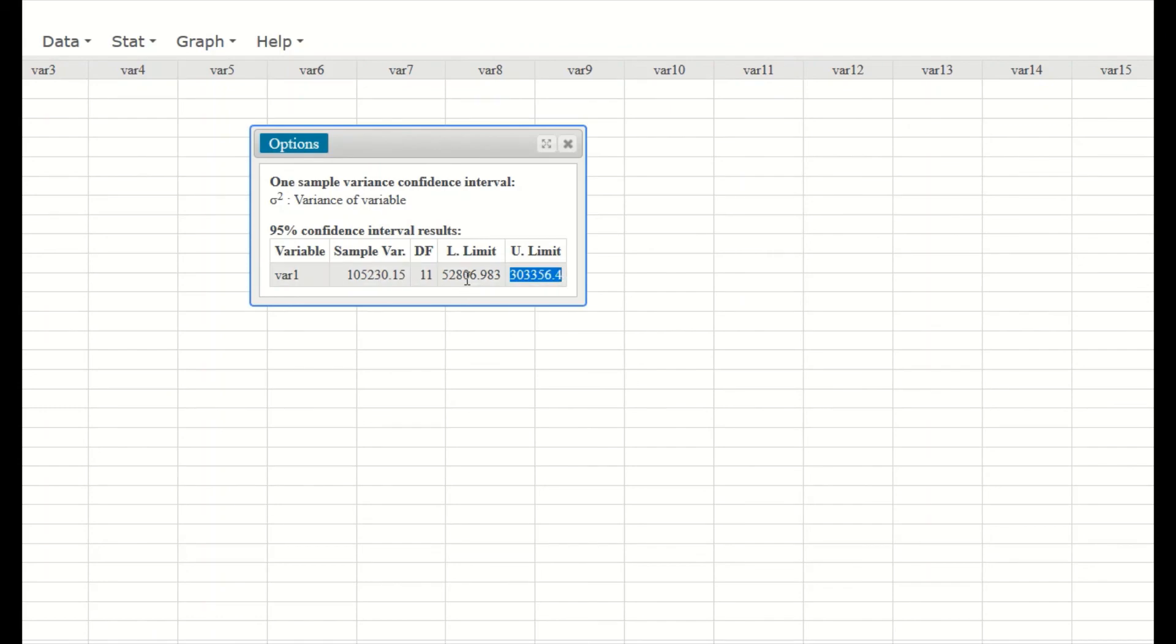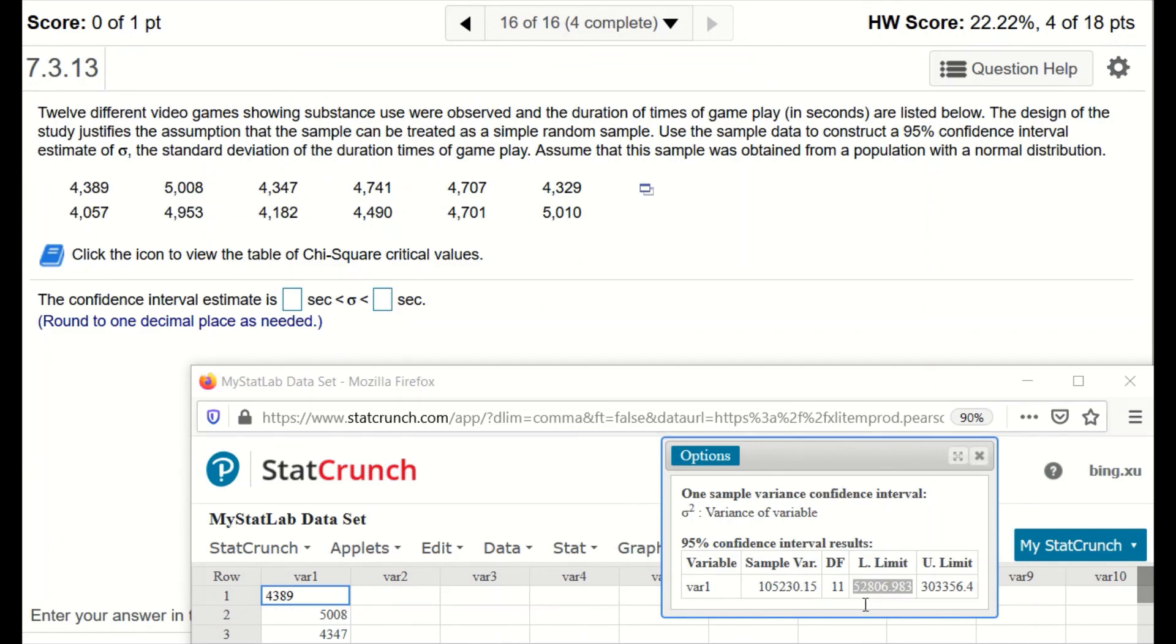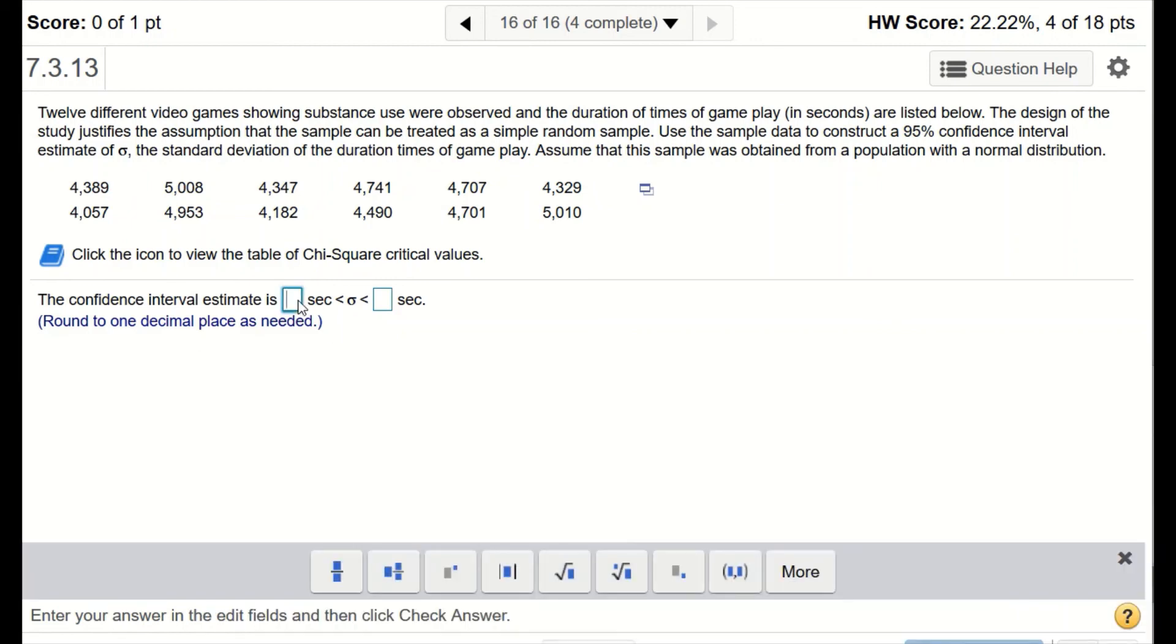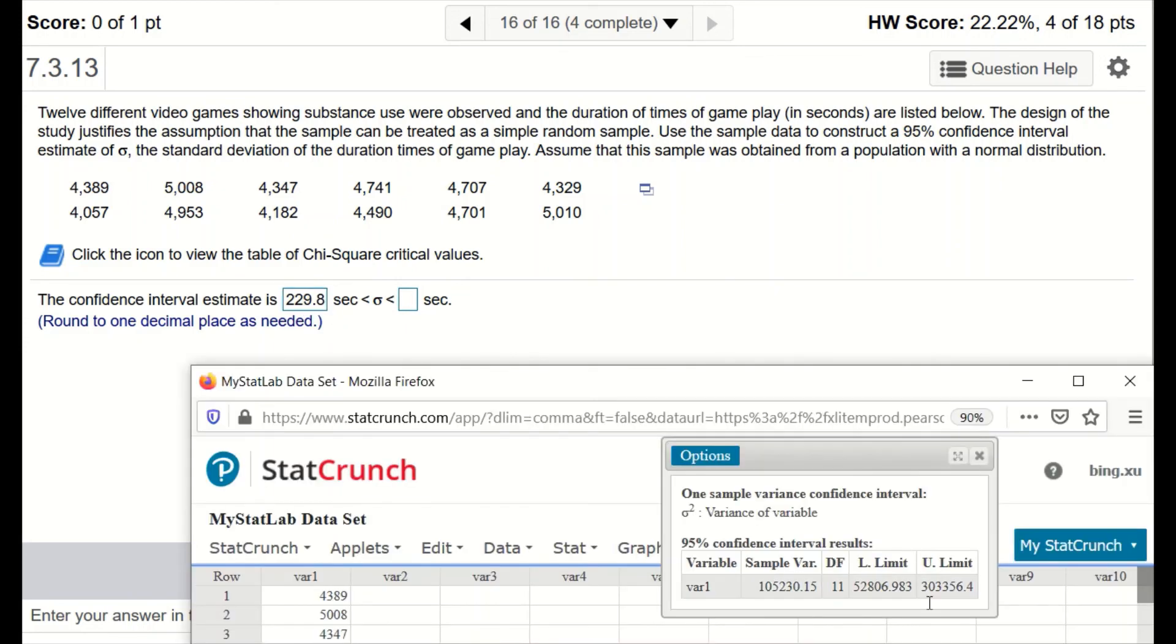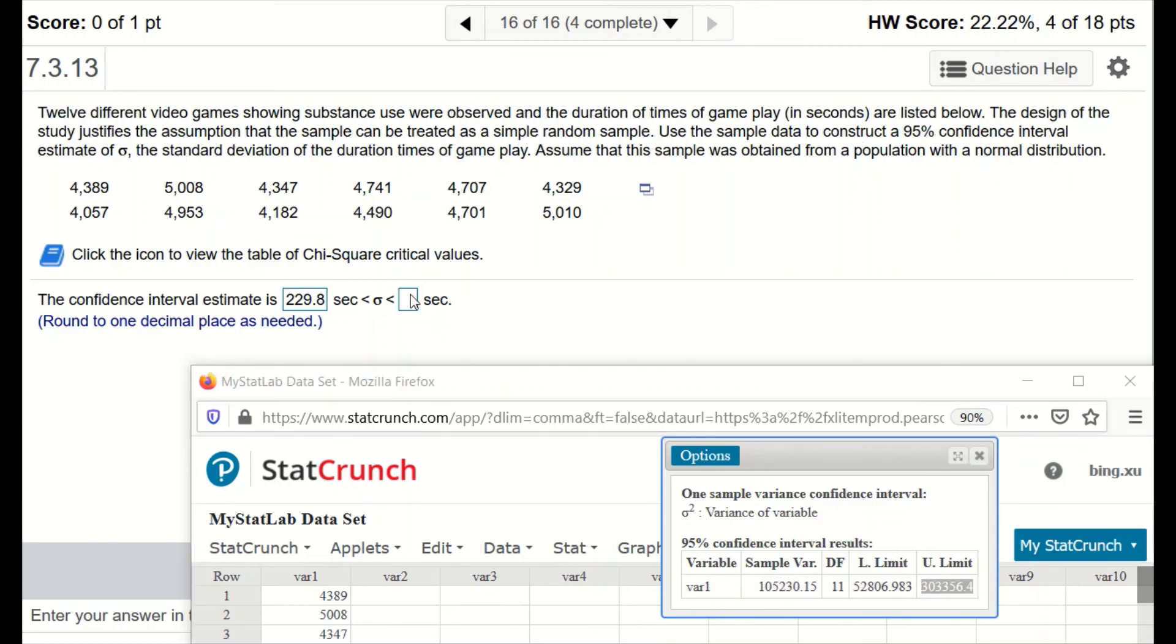But remember, what's given here is the lower limit and upper limit for the variance. To find the standard deviation, you need to square root these two values. So the square root of 52,806.983 is, I'm going to type it here, rounded to one decimal place, 229.8. All right, so now the upper limit is square root of this value. The upper limit is, rounded to the nearest tenth, 550.8.